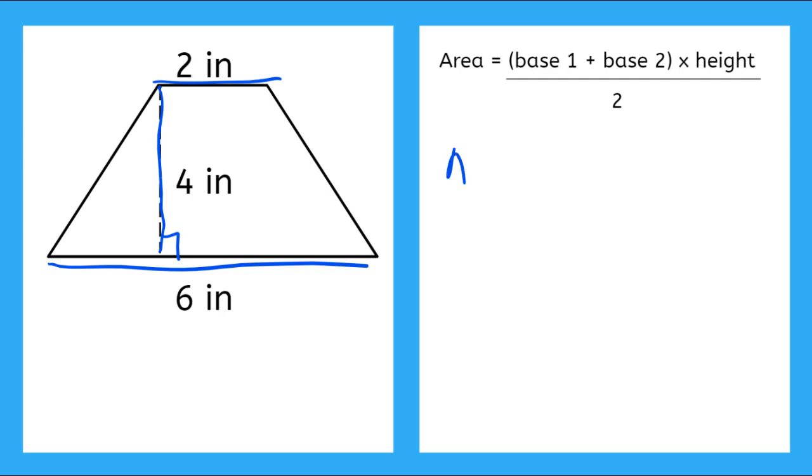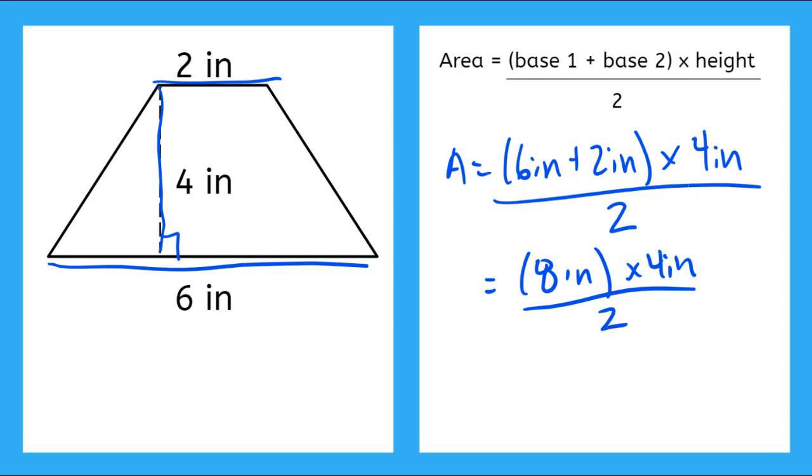All right, so we can say area is equal to six inches plus two inches, all times four inches divided by two. So we do our order of operations, parentheses go first, six inches plus two inches, that gives me eight inches, eight inches times four inches, all over two.